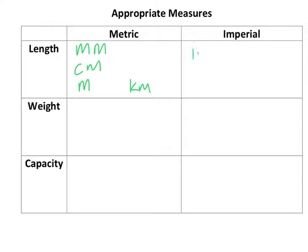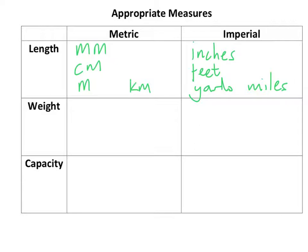For imperial length we've got inches, feet, yards, and miles. They almost tag up to each other: millimetres and inches are equivalent, as are centimetres and feet, metres and yards, and kilometres and miles.